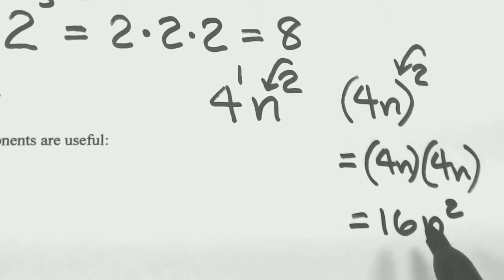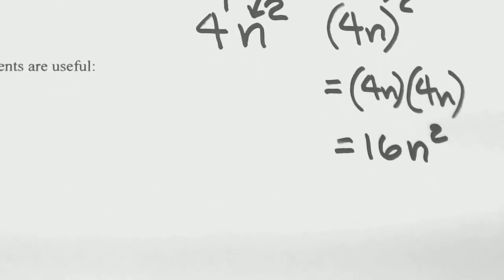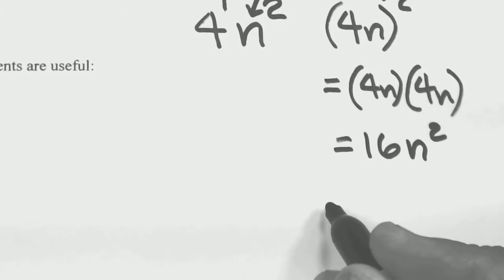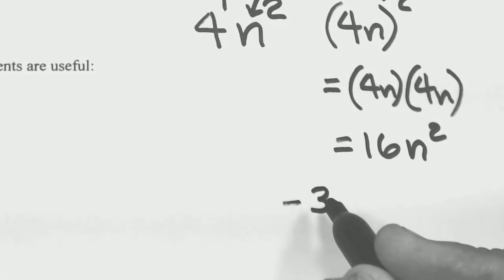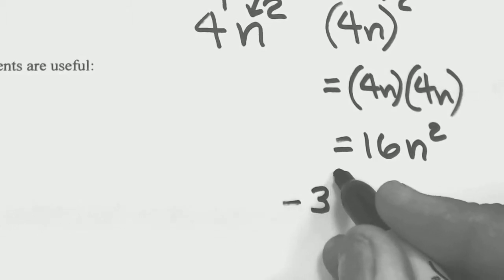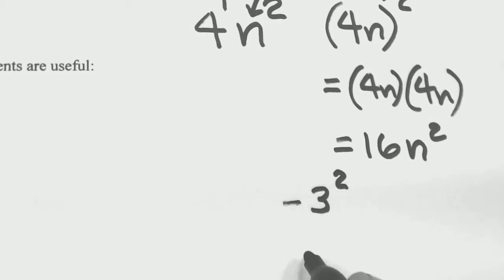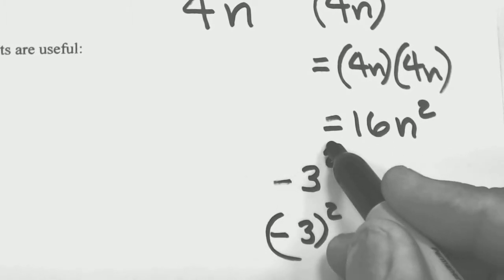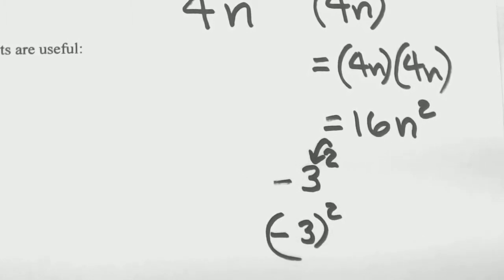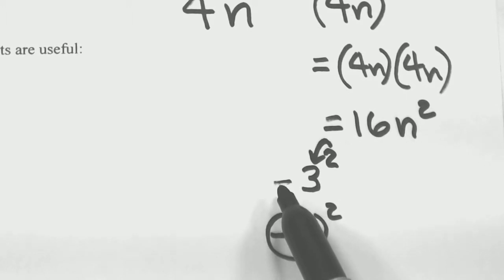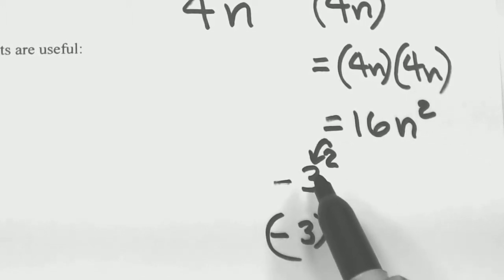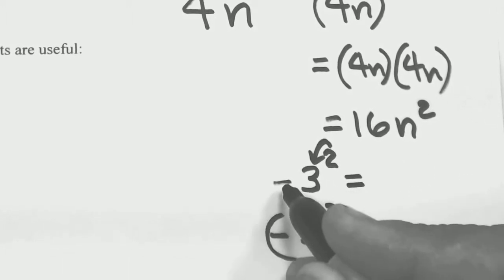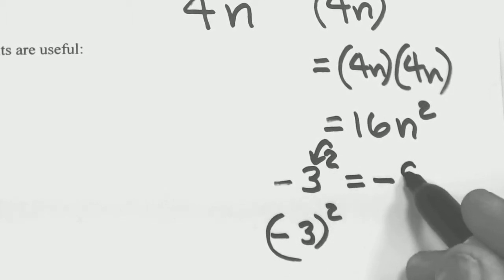These are subtle but very important differences. Now let's look at when we have minus signs. Let's say I've got minus 3 squared. In this case, the exponent only hits the guy immediately in front, which is just the 3 — the minus sign is too far away. So the only thing being squared is the 3, and you keep the single minus sign. 3 squared gives you 9, so the answer is negative 9.